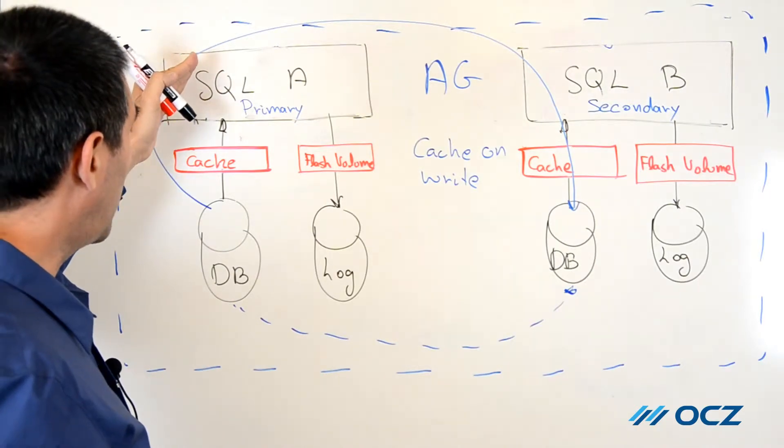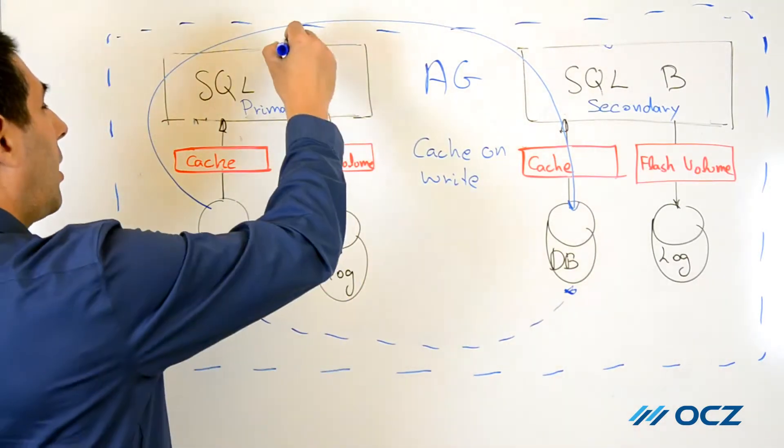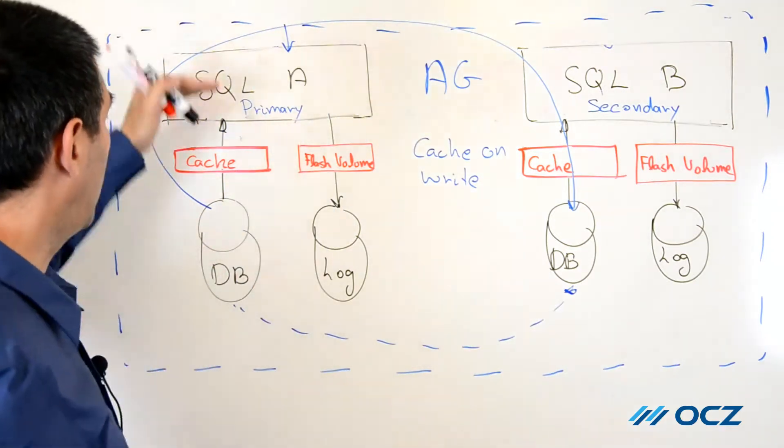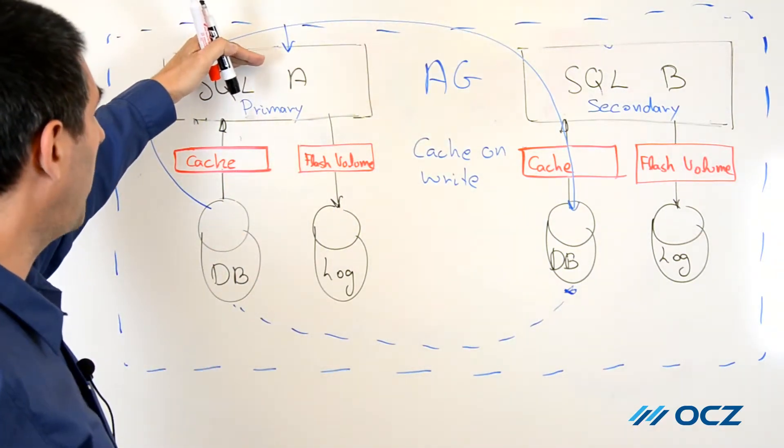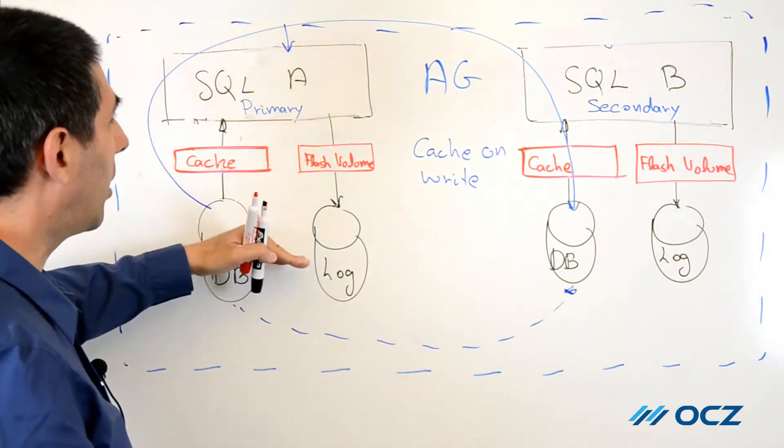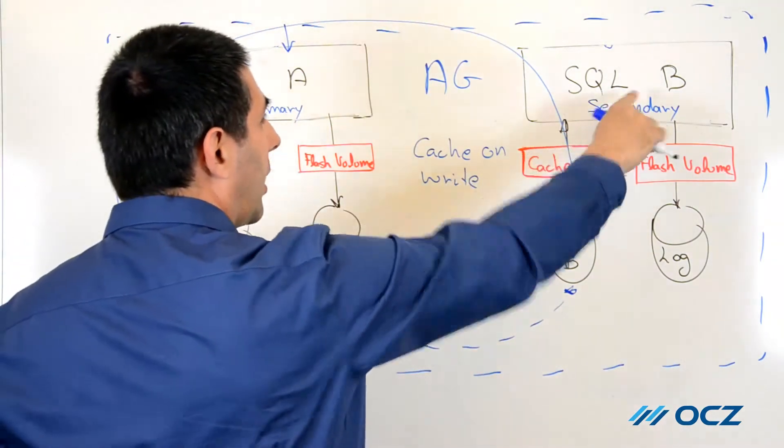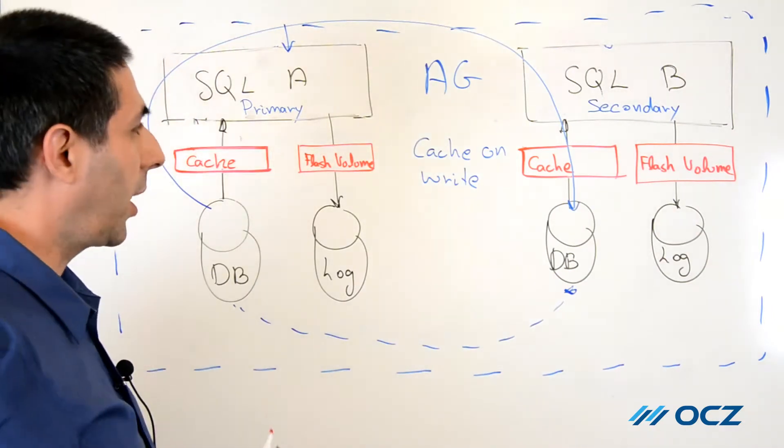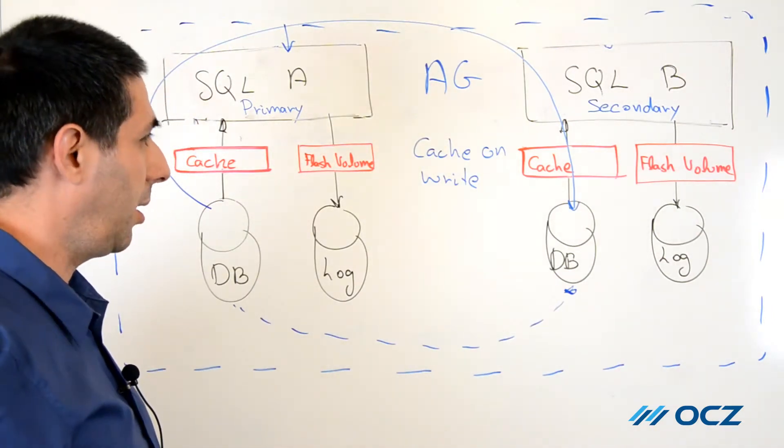Always-on technology allows active-active topology where the SQL server on the primary side can have reading and writing to the database, and the secondary side can have queries or a read-only workload.